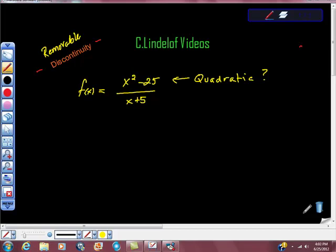So let's take a look at this. We have this function f of x, and we say that it's equal to x squared minus 25 over x plus 5.